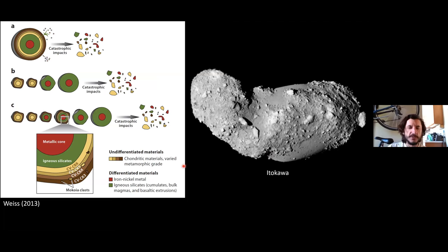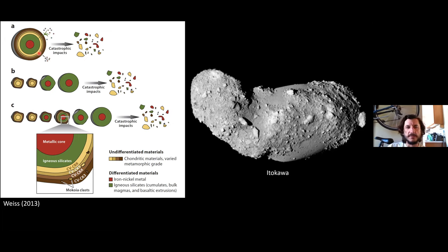Here's a schematic from Weiss 2013 showing differentiated planetesimals. There are three possibilities: early-formed materials form large bodies that differentiate into iron-nickel cores, olivine-rich mantles, and basaltic crust. Then undifferentiated materials continue to accrete after aluminum-26 is extinct — the primary heat source causing melting — and these large bodies are later disrupted by impacts.